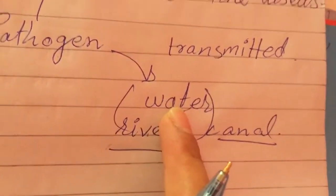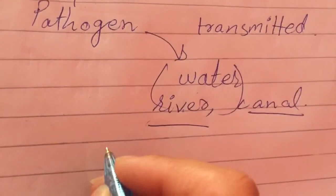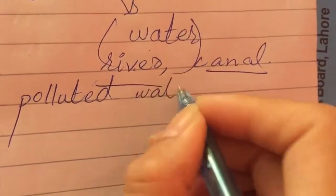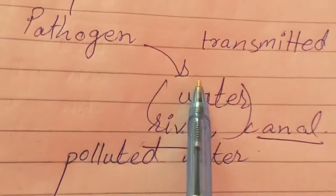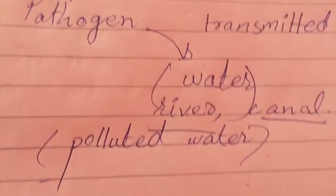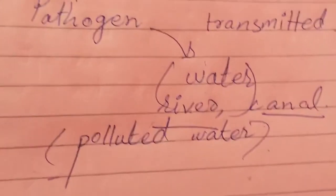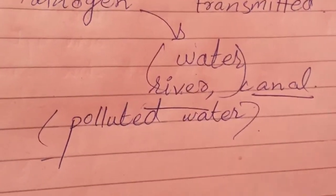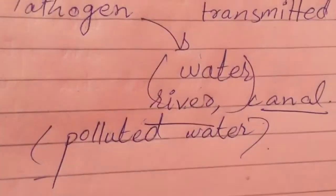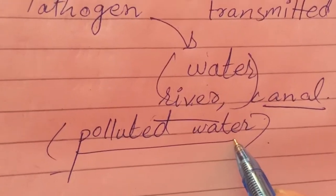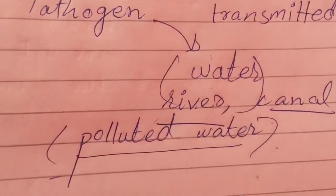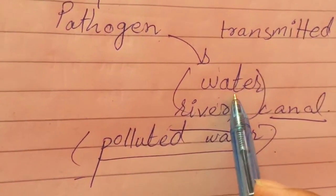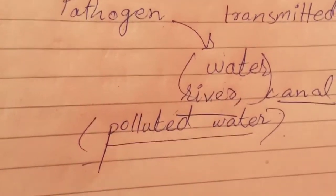The pathogens of some diseases are transmitted through water. Such diseases occur when someone uses polluted water. Water that contains a pathogen is polluted. What we commonly do is dump all our garbage, sewage water, and gutter water into rivers and canals, and then we drink from those same sources. So that is the polluted water we are drinking — and when you drink it, you get the pathogen and also the disease.